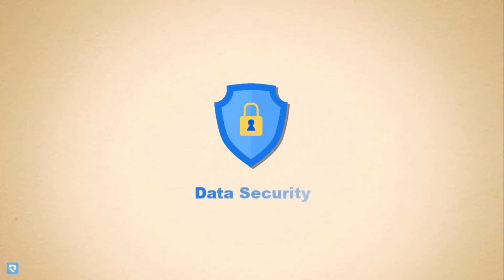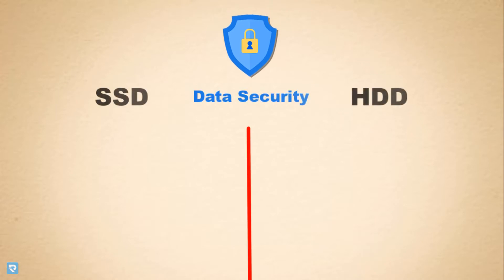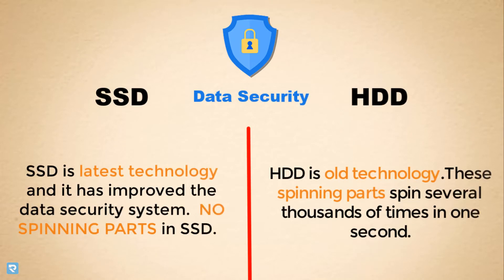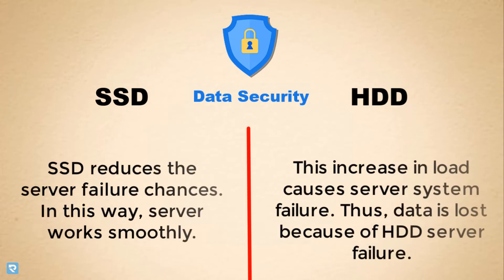Our second point is data security. When we talk about data security, compared to HDD versus SSD, we have to know that HDD has a spinning part — because of that, the life of the HDD might be less and the data corruption chances in HDD are a little bit higher compared to SSD. In SSD, data might not be corrupted very easily, so we can prefer SSD.